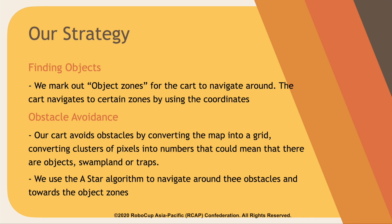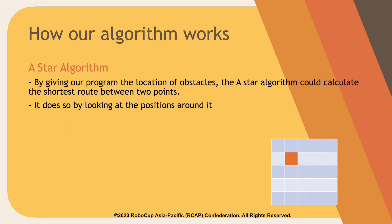We use the A-star algorithm to navigate with this information. How the A-star algorithm works is we give the program the location of obstacles, and the A-star algorithm calculates the shortest route between two points by looking at the positions around it first.